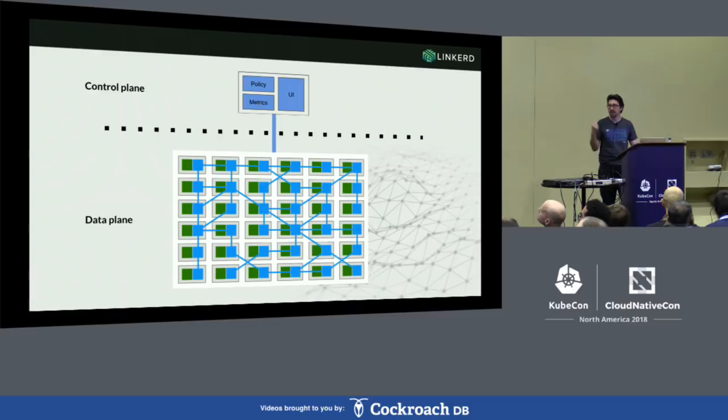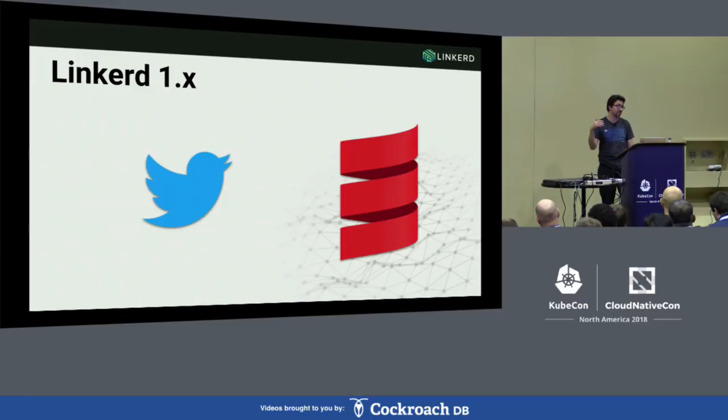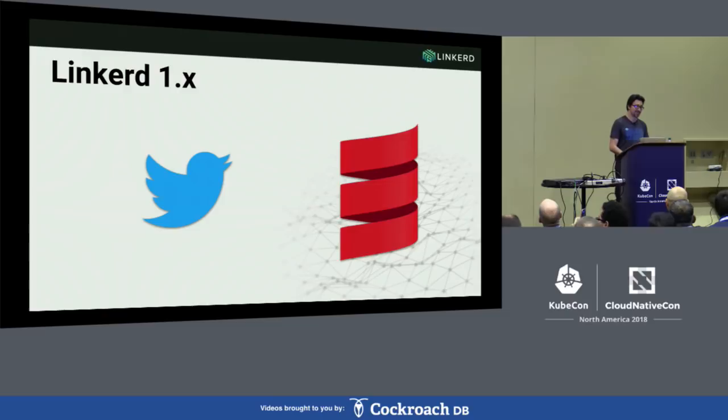To back up a little bit and figure out how we got here — Linkerd's origins go back to Twitter in 2010. At that time it was probably the largest Rails installation on the planet. The summer of 2010 was the World Cup. Every time Brazil scored a goal, everyone would tweet 'goal' and the site would crash. So we were frantically trying to decompose this thing into microservices, and we found that every service kind of needed the same thing — security, visibility, and reliability. So we factored that logic out into a library called Finagle.